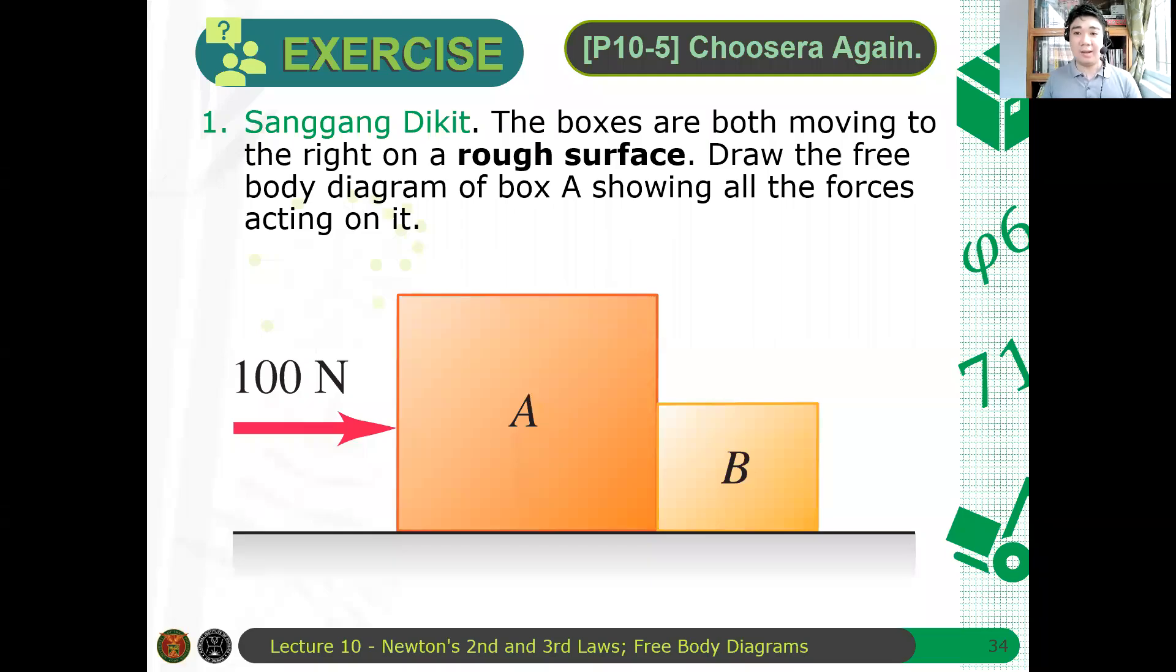Now I'll be giving you some questions. There are three of them. So please answer the following. First, the boxes are both moving to the right on a rough surface. Again, this is a rough surface. Draw the free body diagram. So again, you have two boxes A and B. A 100N force acts on A. What is the free body diagram for box A?